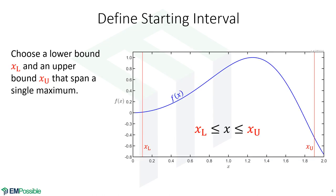Let's start out with some function. The first thing we want to do is choose a lower and an upper bound that span the extremum. We have some position called x sub l for the lower bound, some position x sub u for the upper bound, and we're going to be operating between these two bounds. We have to assume there is only one extremum between those bounds — if there are multiple, this method can fail.